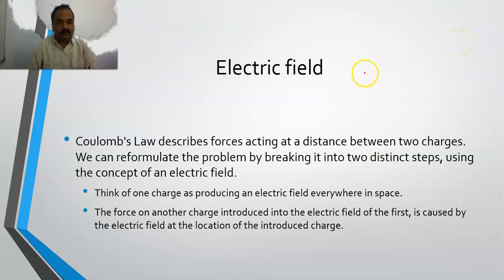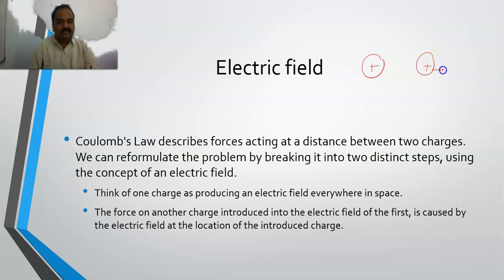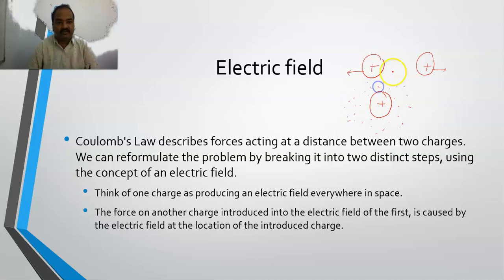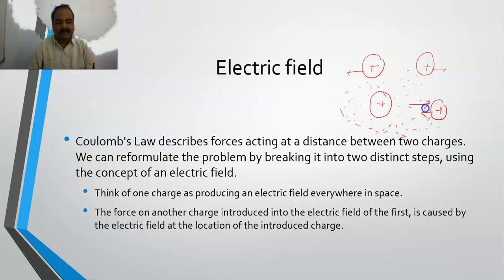Coulomb's Law states that F is proportional to Q1 Q2 by R squared. Now let us take this in other words. Let us suppose there is a charge — it is having an impact around it, an area, which we can call its vicinity. So if I bring any other positive charge into this field, into this area, automatically it gets repelled. Which means that this is the area where the impact of this charge is being felt.